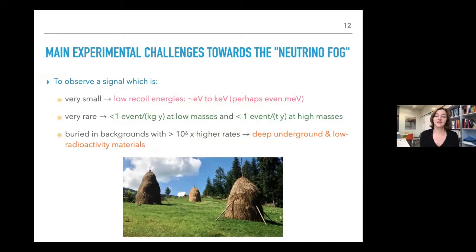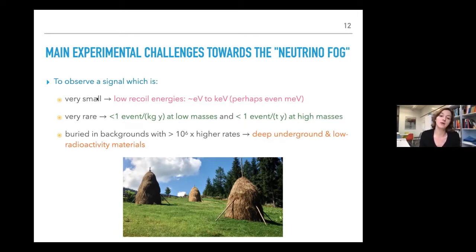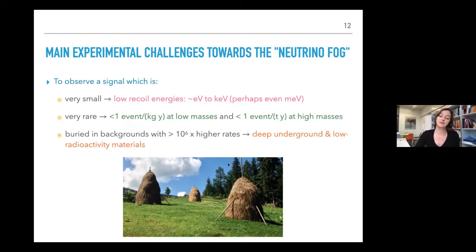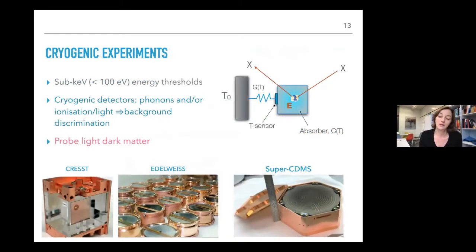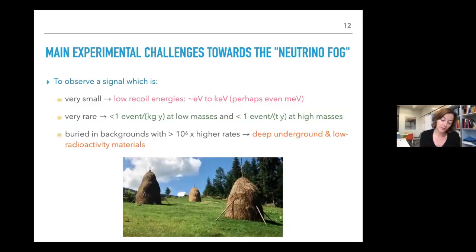There are significant challenges: low recoil energies from keV down to eV, perhaps milli-eV depending on mass; very rare events — less than one event per kilogram-year at low masses, and less than one event per ton-year at higher masses. Backgrounds are millions of times higher. We must shield cosmic backgrounds by going deep underground, shield environmental radioactivity, and use detector materials with extremely low radioactivity — including the dark matter target materials themselves.